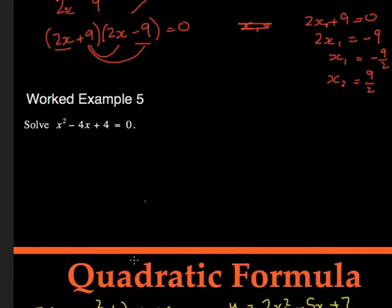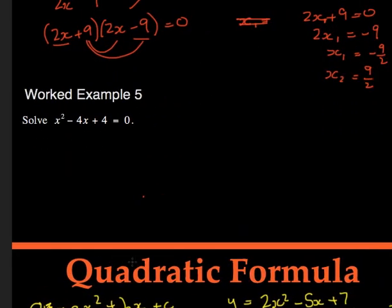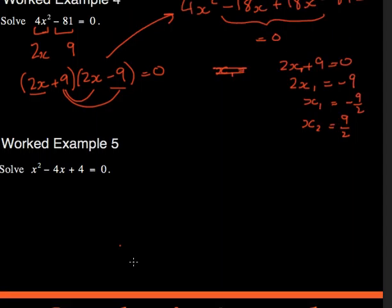Okay. The final example is about where I've got my a is 1, my b is minus 4, my c is 4. Let's just try it in the normal way. So if I have two brackets, the first term here would both be x to get x squared. That equals 0. What two numbers should I put here to make 4, to multiply to make 4, but add to make minus 4?